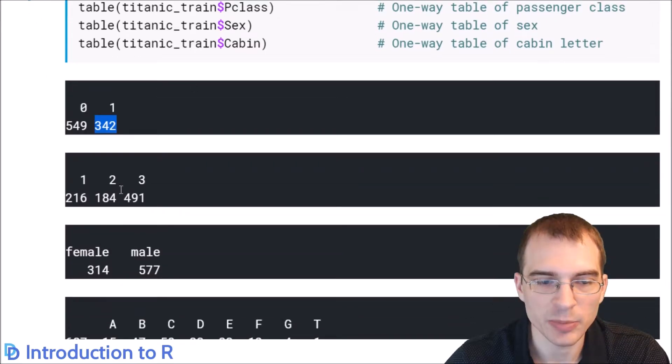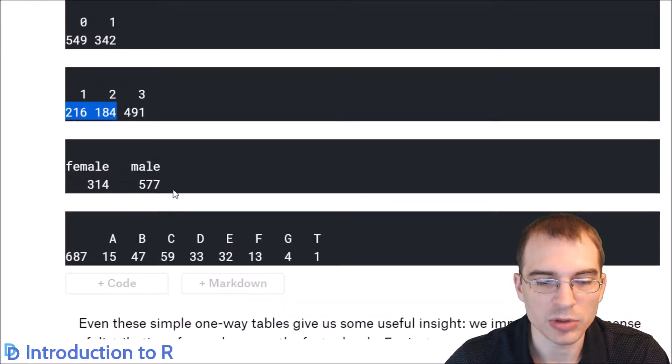Similarly, for passenger class, we can see that the most people were in third class because we have 491 here under class 3. And for first and second class, there were about the same number of people. For the gender variable or sex variable, we had more male passengers in the Titanic than female passengers.